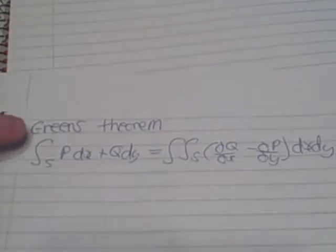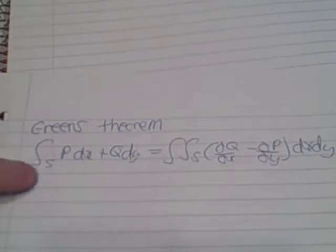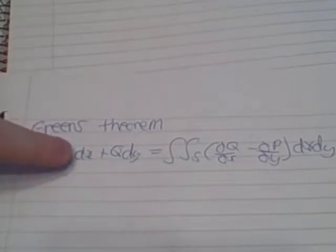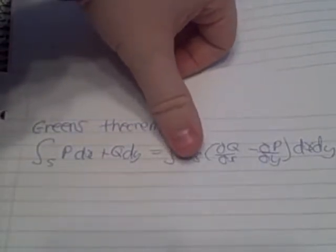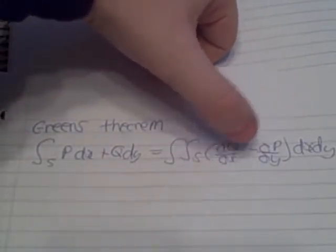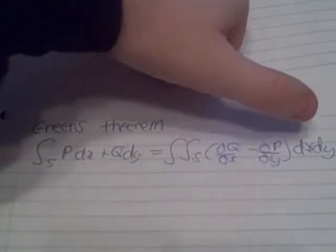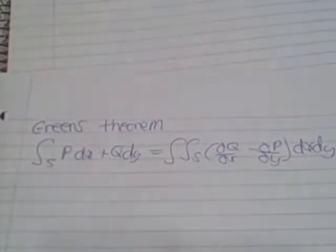So just to start off, Green's Theorem: this is where you have an integral over a space of p dx plus q dy. This can be changed into the double integral of the space s of dq over dx minus dp over dy dx dy. And that's pretty much it.